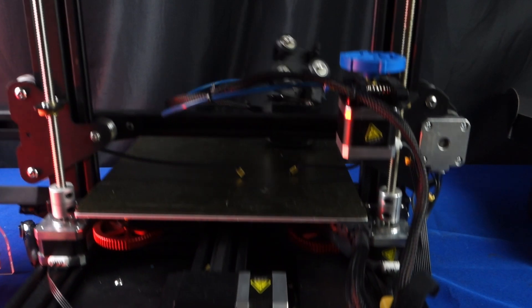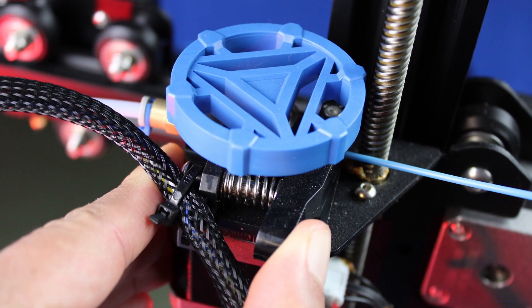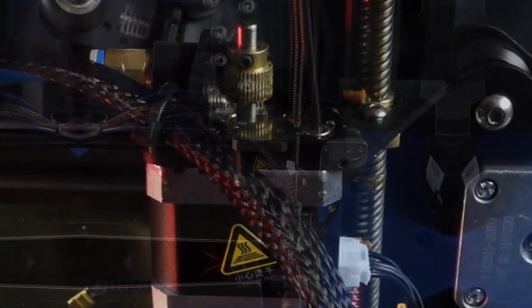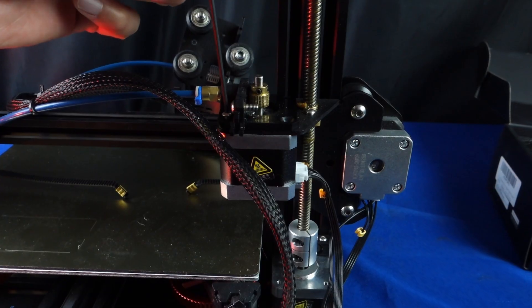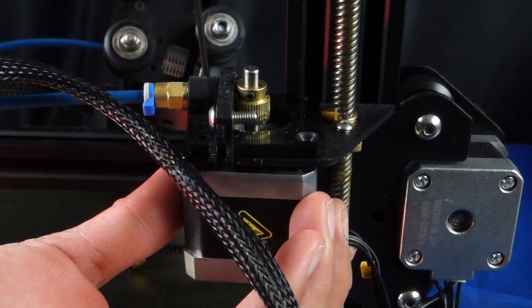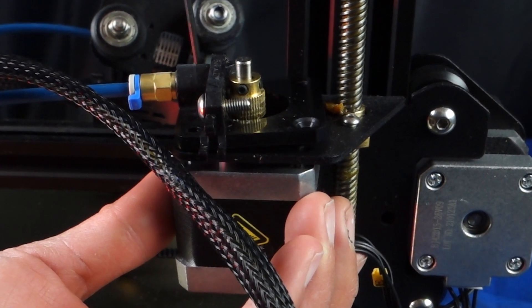Since it has an open design the original bowden tube extruder is fairly easy to remove, however you want to make sure to hold onto the motor so it doesn't fall onto your build plate. After taking off the feeder knob there will be a couple screws that you'll need to remove in order to release the motor from the mount. There's one screw for the adjustment arm and two for the base plate.